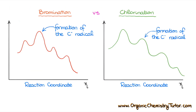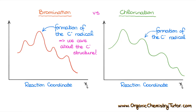Why do these reaction energies matter? We look at them to understand the overall reaction energy profile. In bromination, the formation of the carbon radical is the rate-determining step — the slowest step with the highest activation energy. In chlorination, forming the carbon radical is not the most energy-intensive step. This means that in bromination the structure and stability of the radical are very important, while in chlorination it has much less impact — and this plays a huge role in the regioselectivity of radical halogenation.